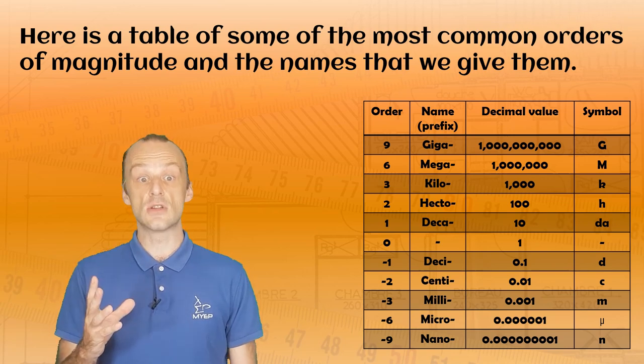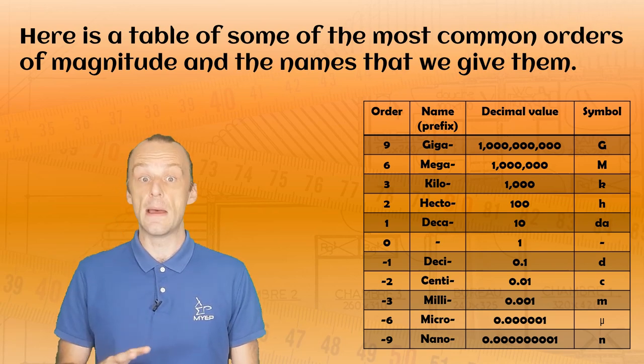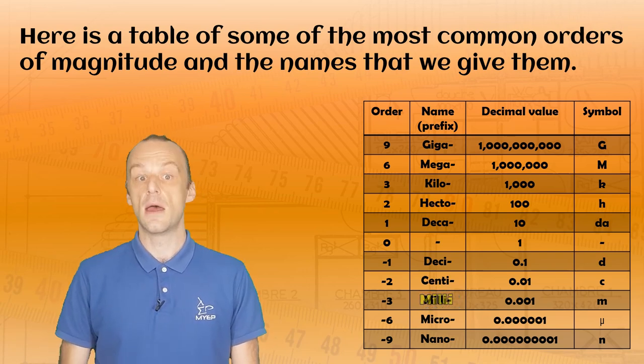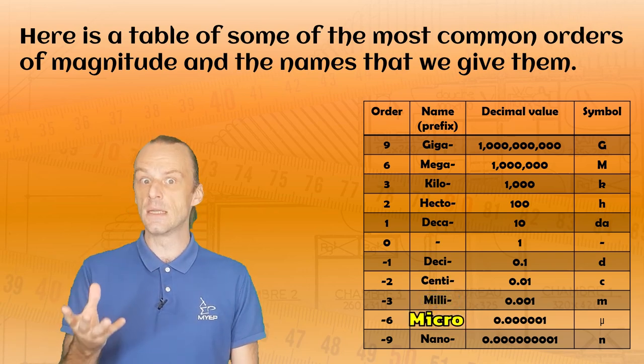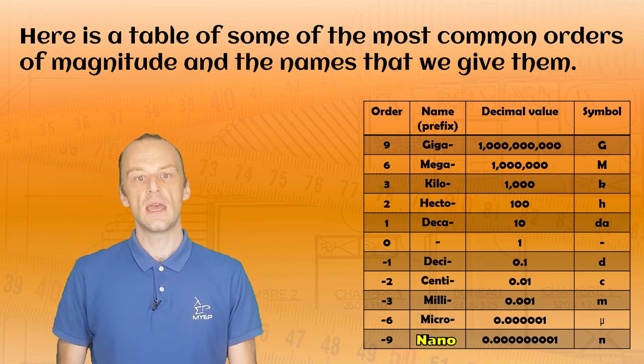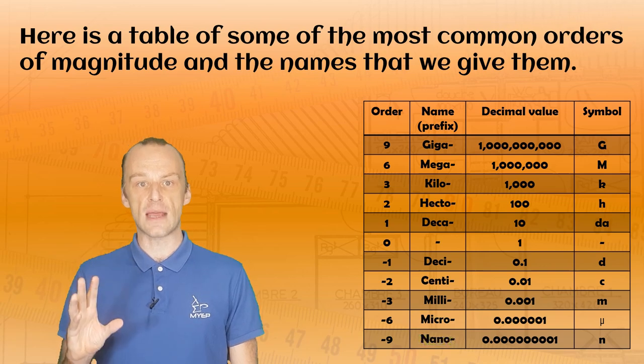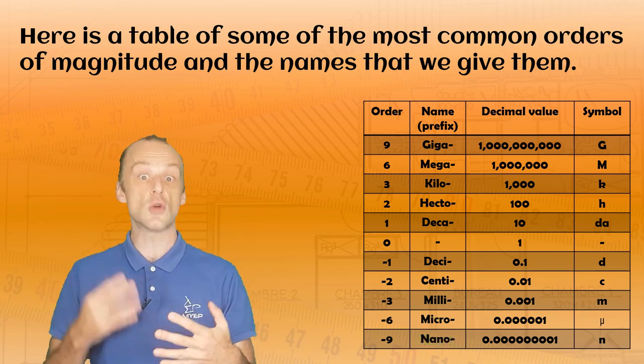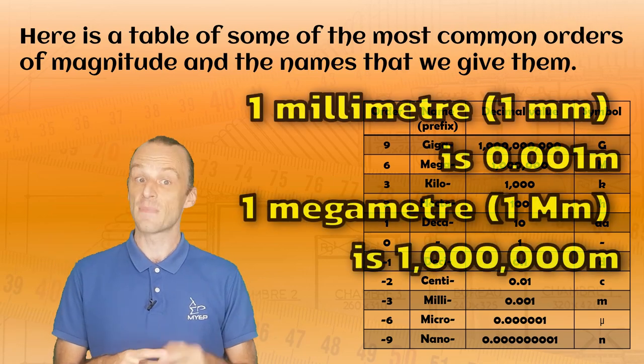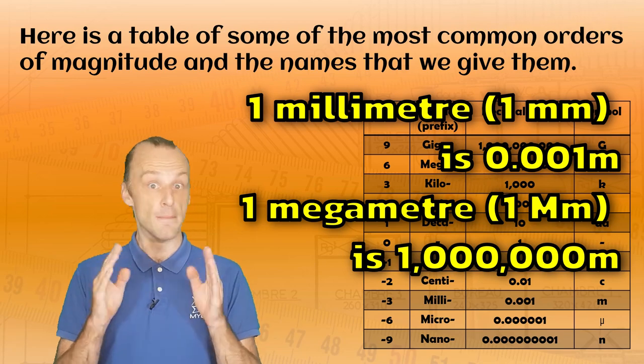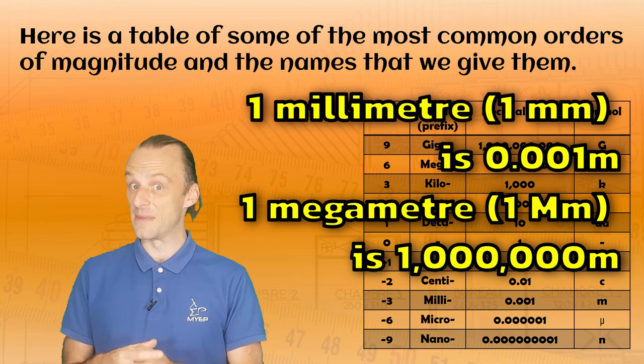The same goes on when we make things smaller. Milli makes a number one thousand times smaller. Micro is a million times smaller, and nano a billion times smaller. Each of these different orders of magnitude has its own symbol, which might be either an uppercase or a lowercase letter. Make sure you get the right one. There is a big difference between millimetres and megameters.